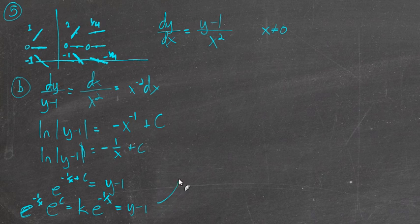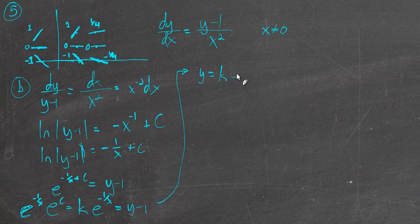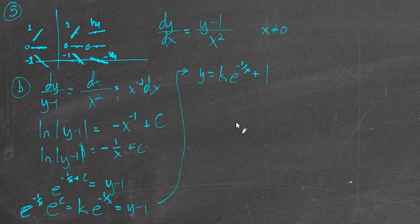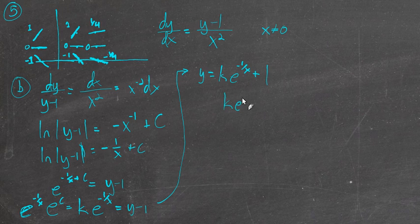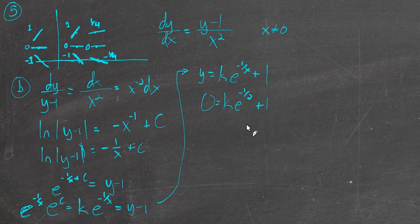So y equals k times e to the negative 1 over x plus 1. That's great, except we don't know what k is, but they do tell us that f(2) is 0. So if we put 2 in there, we should get 0. We just need to solve for k.